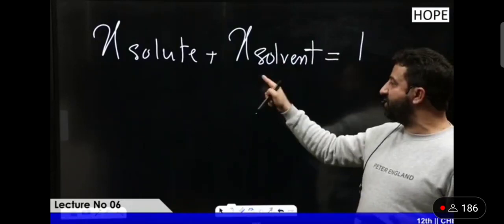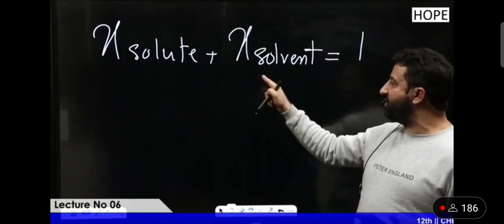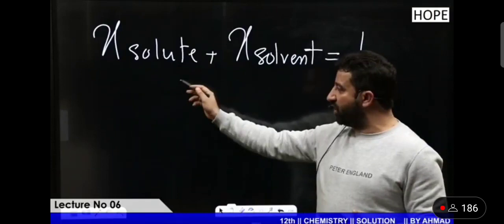Mole fraction of solvent is n solvent divided by n solute plus n solvent. The denominator is the same in both fractions. When we add them, n solute plus n solvent cancels, and the answer we get is one.